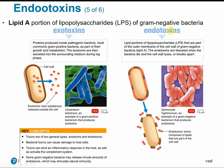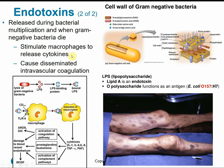Endotoxins are produced within bacterial cells and make up part of the outer cell wall in gram-negative bacteria. Recall the lipopolysaccharide layer in gram-negative bacteria — the lipid A in the lipopolysaccharide portion is that endotoxin. Endotoxins are generally released during replication or cell death, so it's possible to have endotoxins present even after you kill the cell — they are more heat-stable than the cells themselves. These endotoxins can cause macrophages to release cytokines and lead to cytokine storms and septic shock.